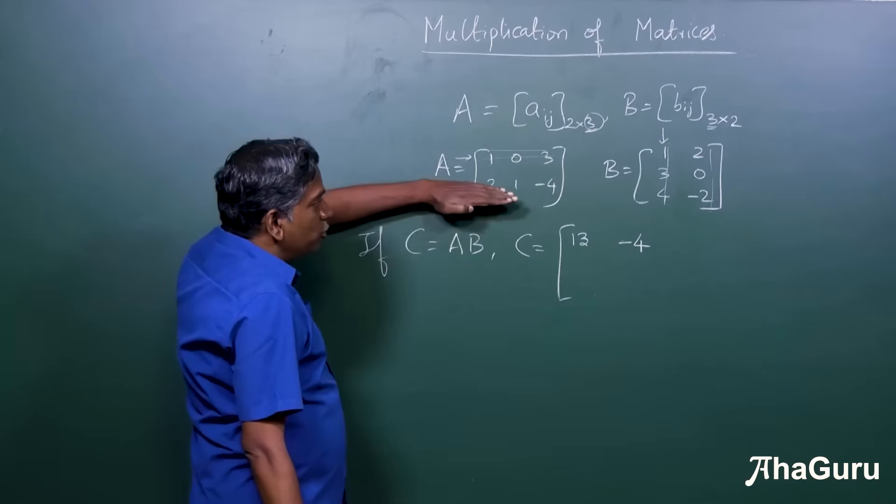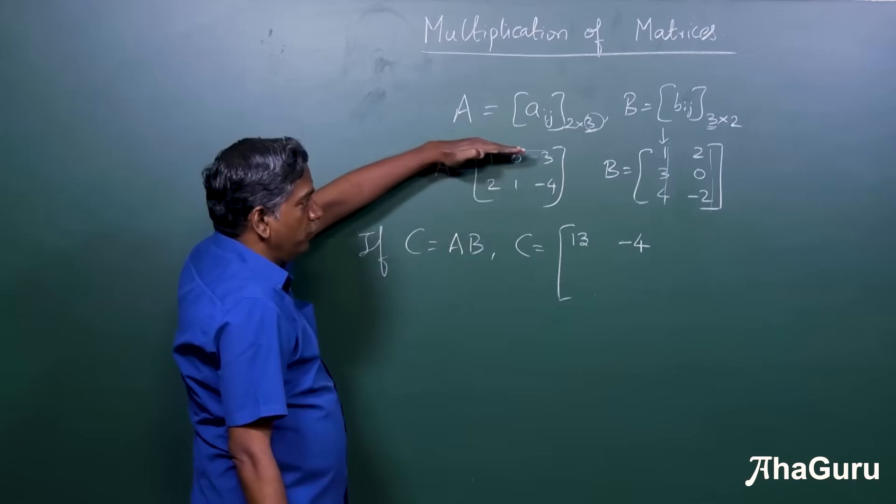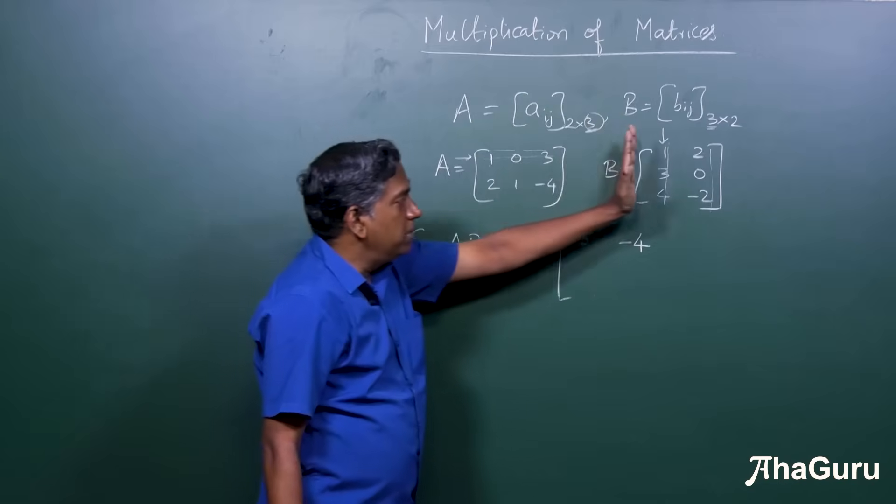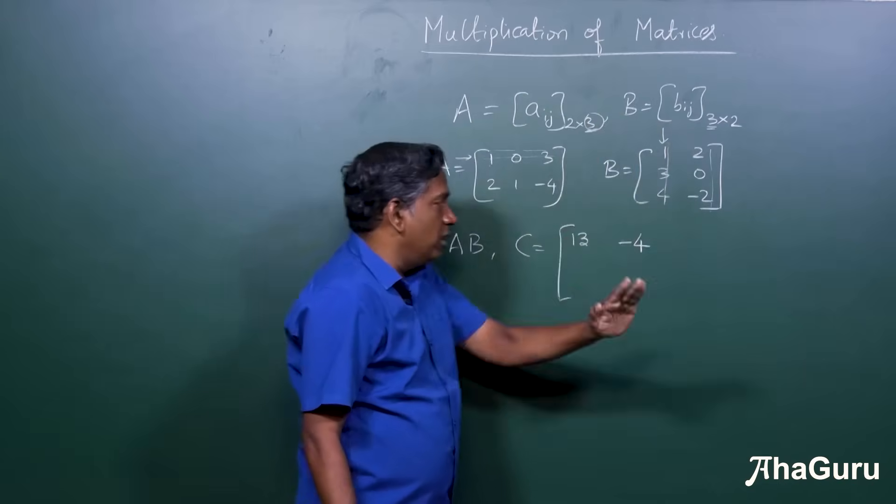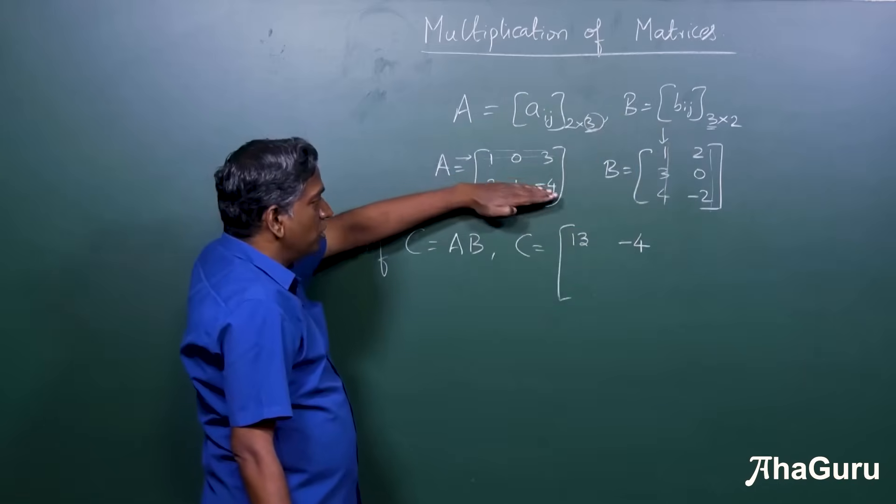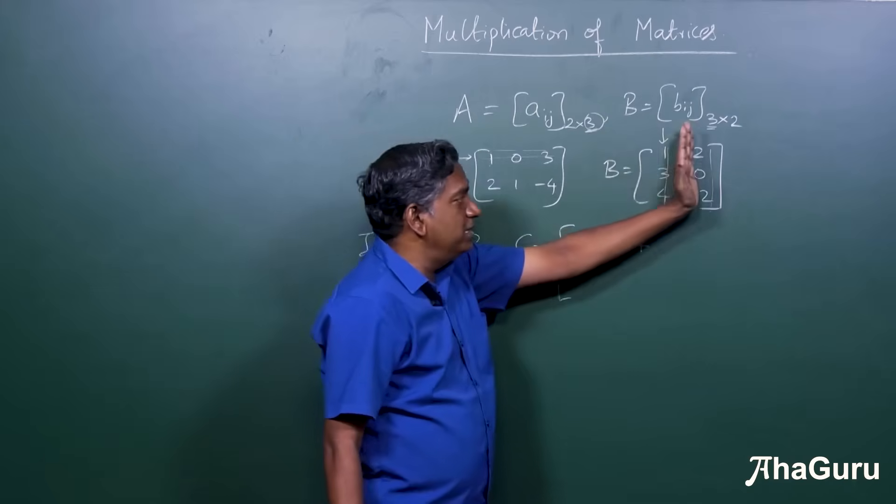Now let's come to the next row. We are done with the first row. We have taken the first row, multiplied it by the first column and then second column. Let's take the second row. We'll multiply it by the first column and then the second column.